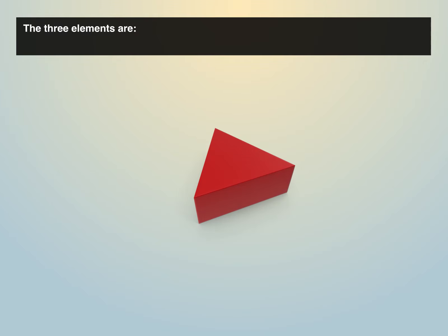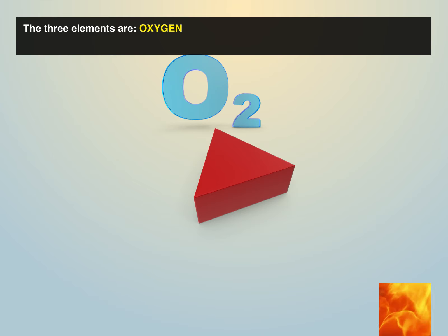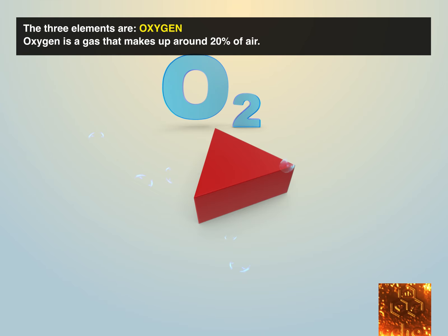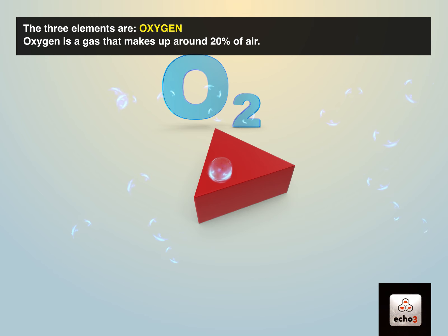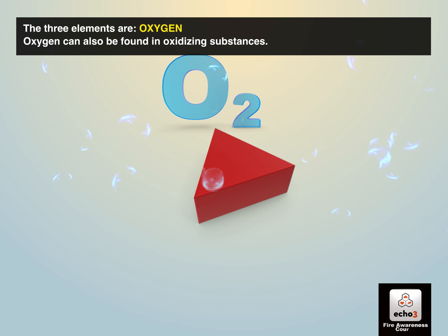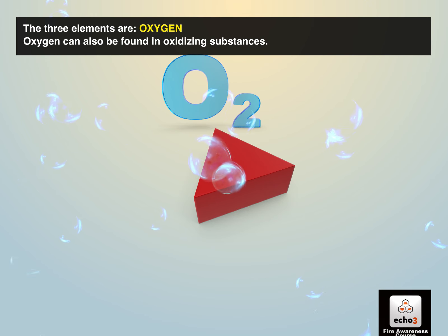The three elements are: Oxygen. Oxygen is a gas that makes up around 20% of air. Oxygen can also be found in oxidizing substances.